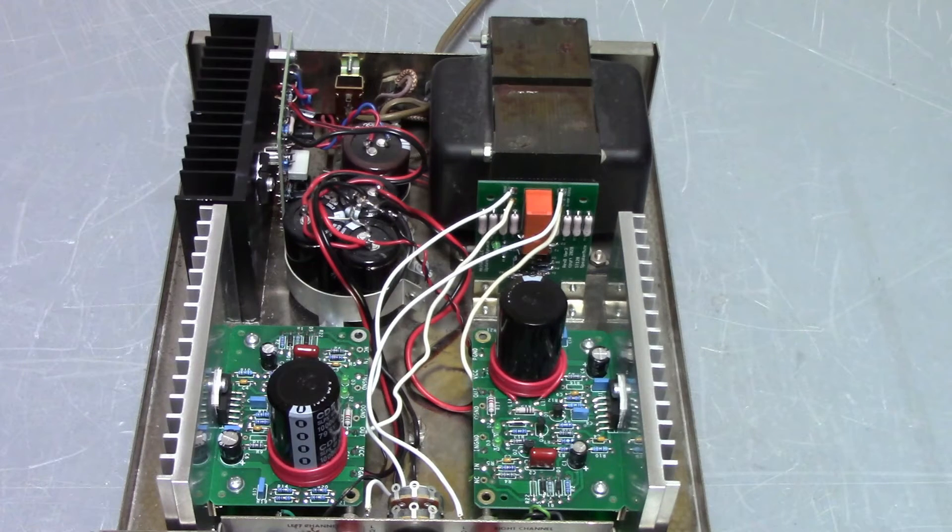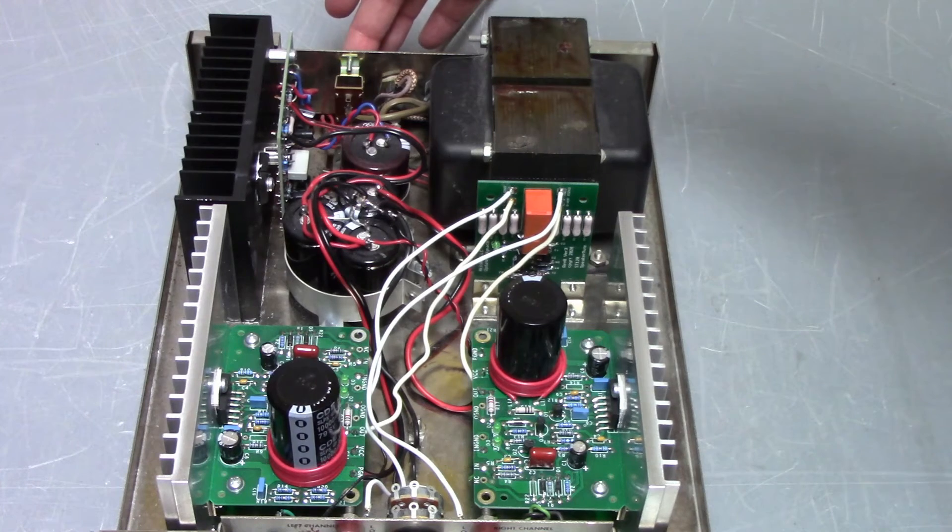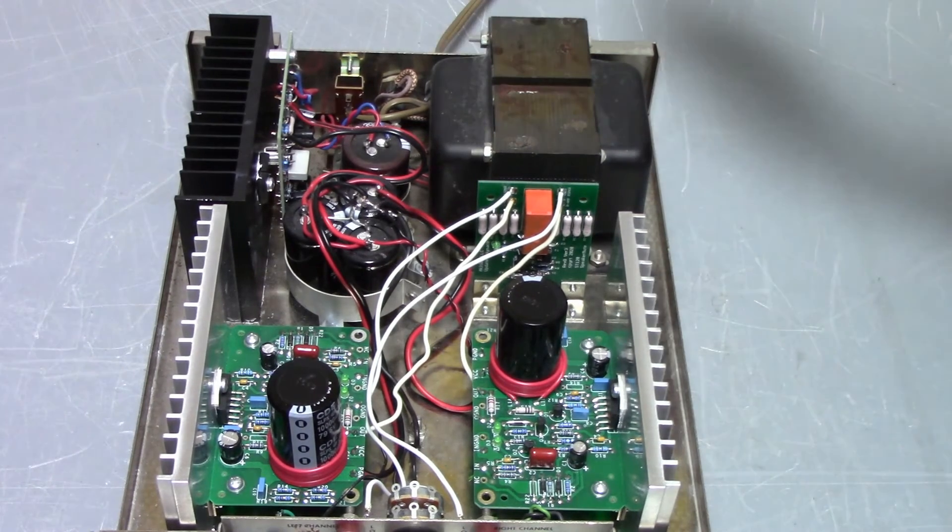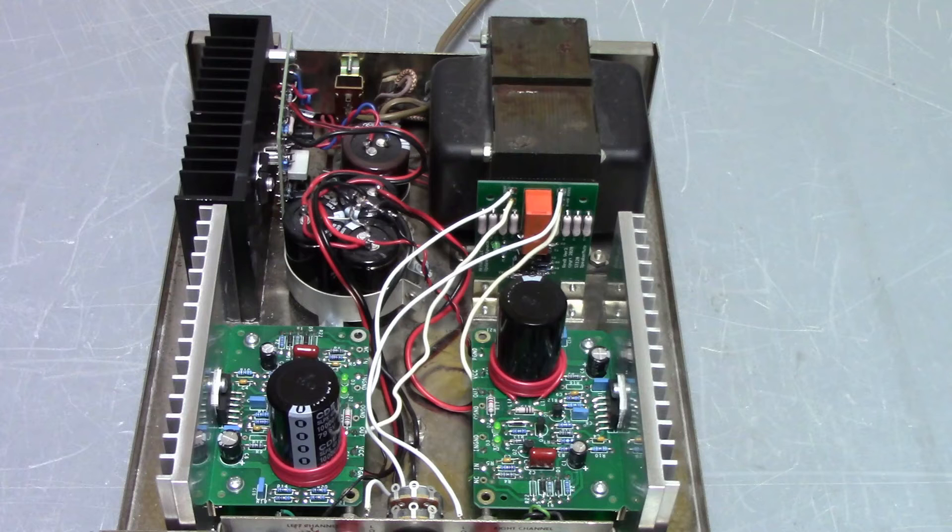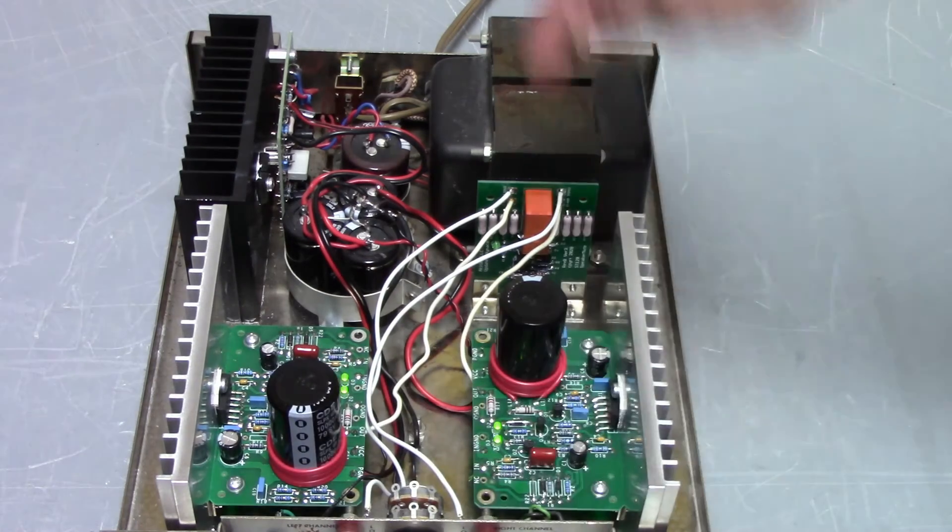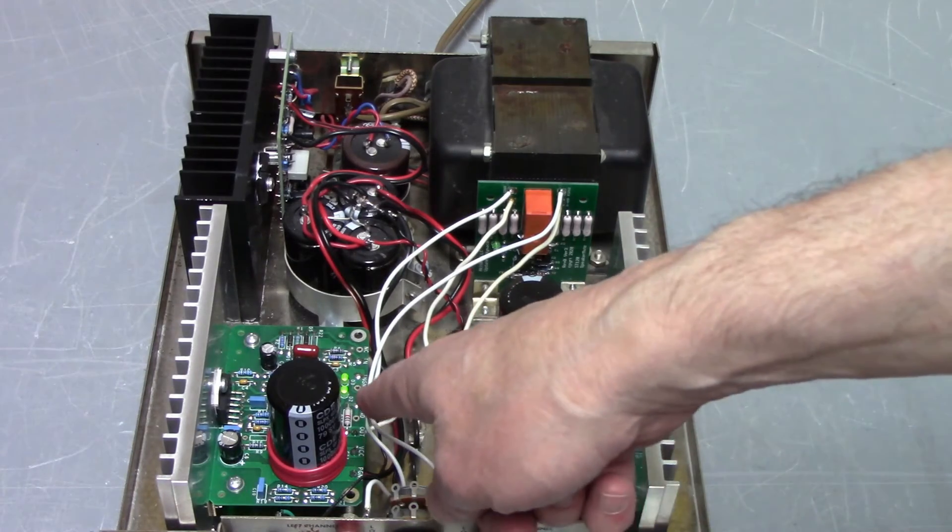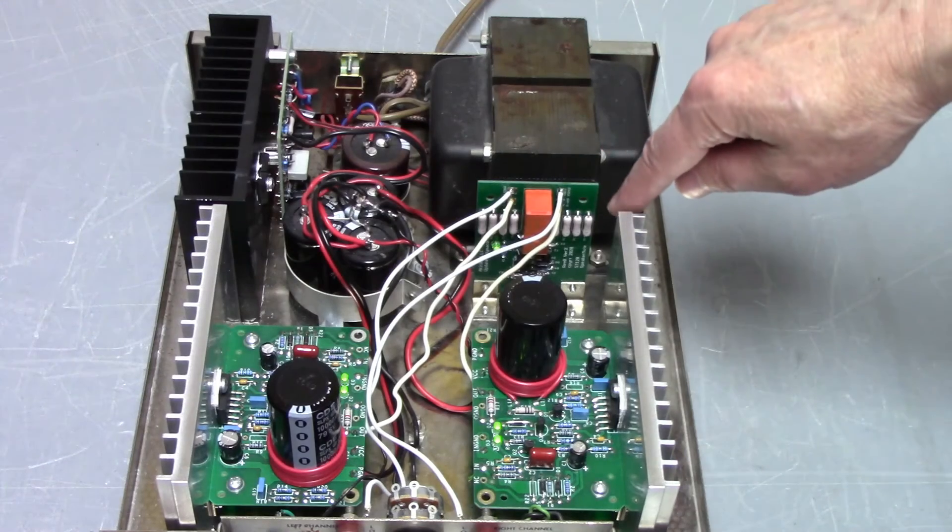So let's see the muting relay in action. What we're going to do is turn the amp on and we'll just wait because there's about a 20 second time where the power supply comes up and where we're charging up these capacitors and the big capacitors. And during all of that time, the relay connects the amplifier outputs to these load resistors.